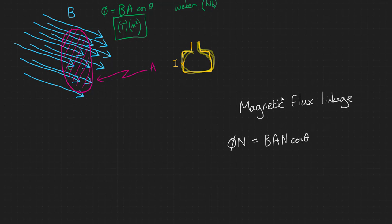n is dimensionless, it's just a number without a unit. So flux linkage has the same unit as flux: the Weber.